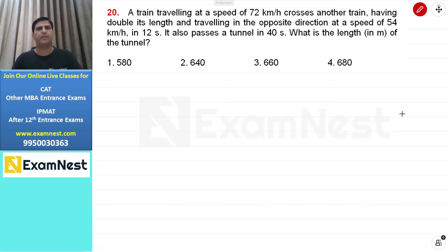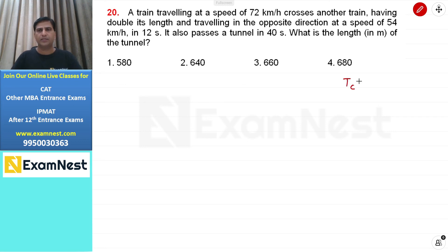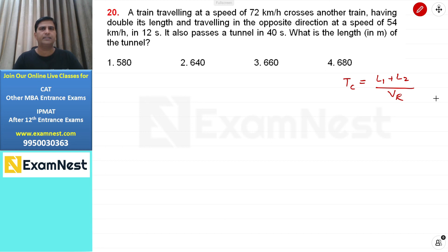यह question time, speed and distance में crossing time of trains पर based, एक easy to moderate level का question है। Crossing time का basic formula: (L1 + L2) divided by relative speed। जब दो objects opposite direction में move करते हैं तो relative speed = sum of speeds; same direction में तो higher minus lower speed।